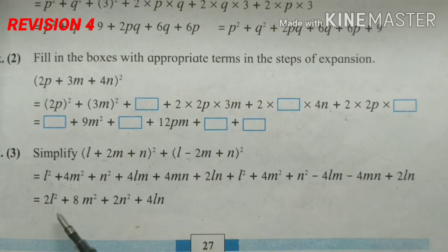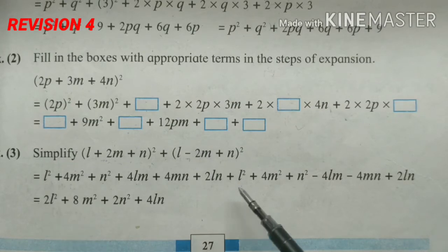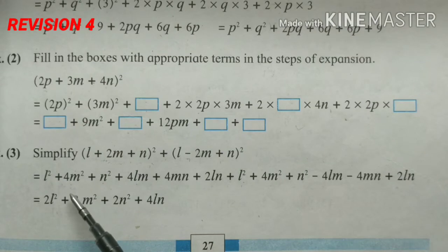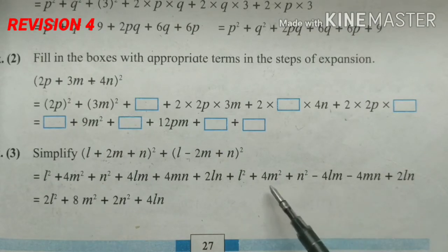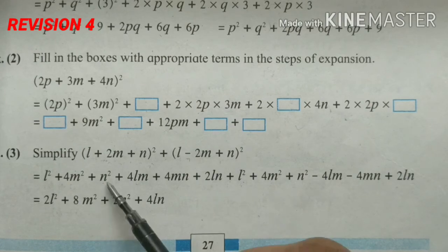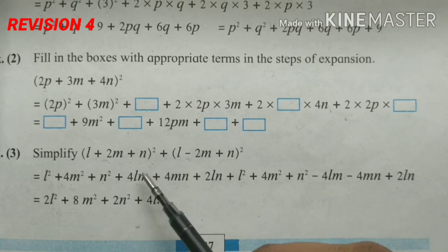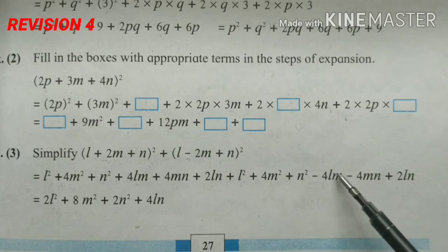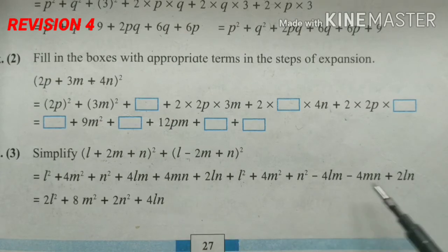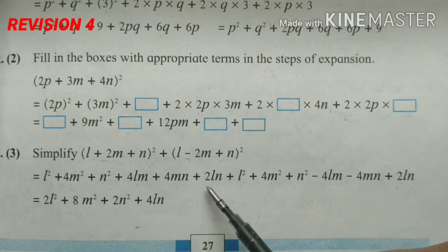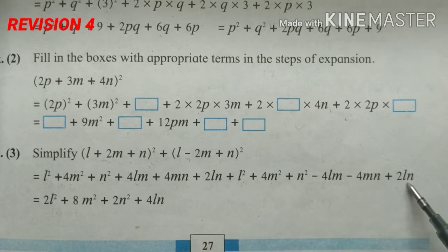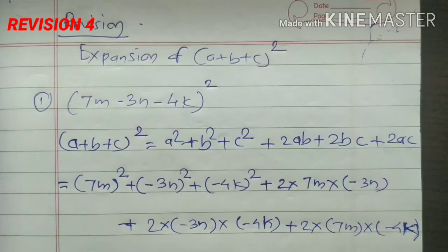Now collecting like terms: l and l square gives twice l square. Then 8m square — both m square terms are the same. n square and n square are the same. The 4ml and 4lm cancel out as they are opposite in sign. mn and mn also cancel as they are opposite. And twice l plus twice l gives 4. This is the final answer.